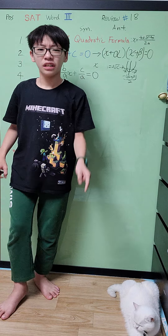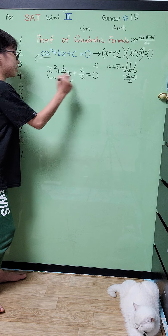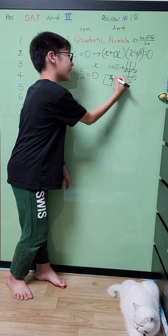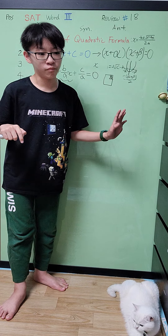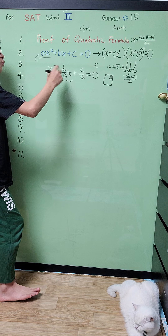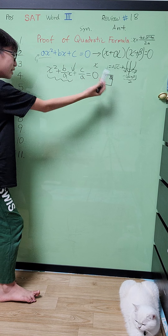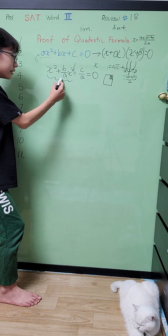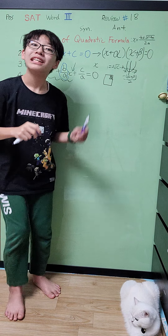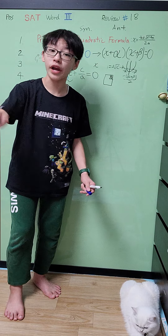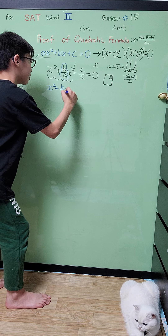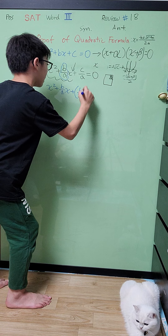Now let's try to turn this into a perfect square. But there's that little part missing, so we'll have to add it in — this is the method called completing the square. To complete the square on x² + (b/a)x, we take this coefficient divided by 2, then square it. So we add (b/2a)² to the expression.